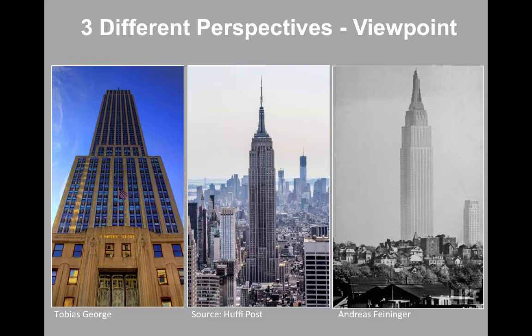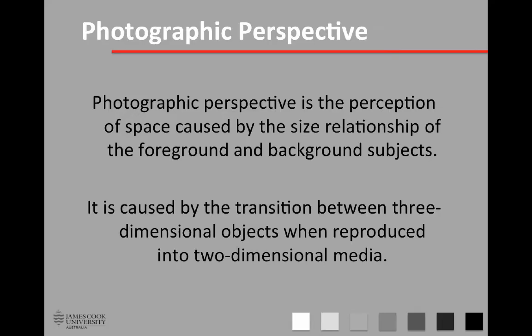In this lecture we're talking about the transition between three-dimensional subjects and two-dimensional medium. What's interesting is these three images are of the same subject — the Empire State Building in New York — showing a very close distance perspective from ground looking up with strong diminishing shape, a moderate distance perspective in the middle, and then a very flat perspective taken at a greater distance by Andreas Feininger.